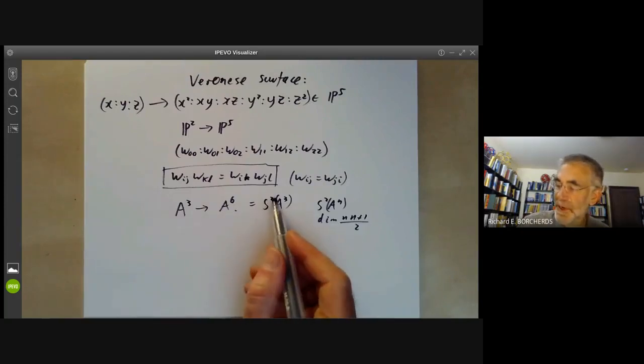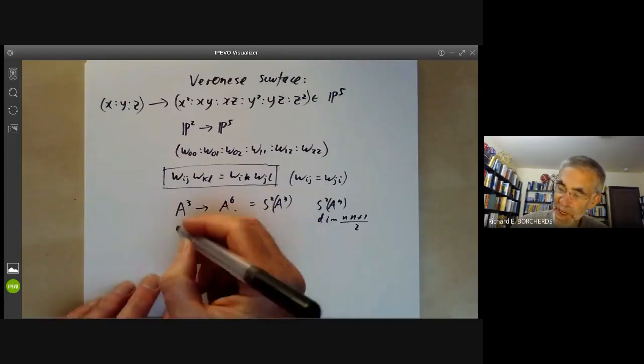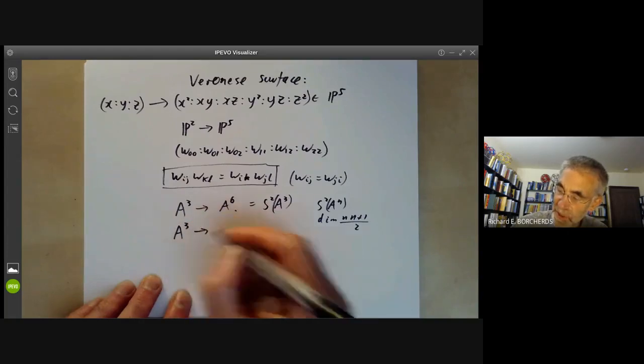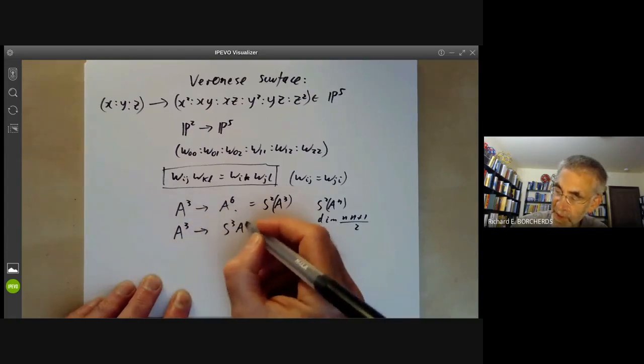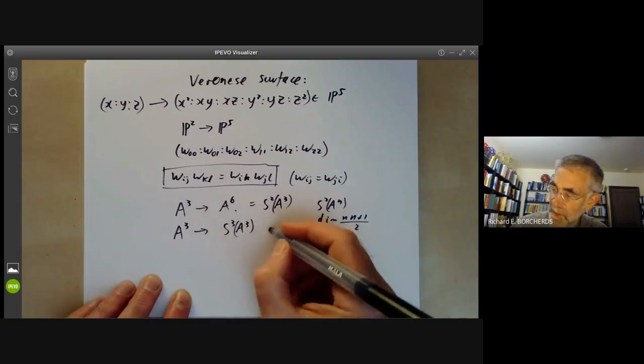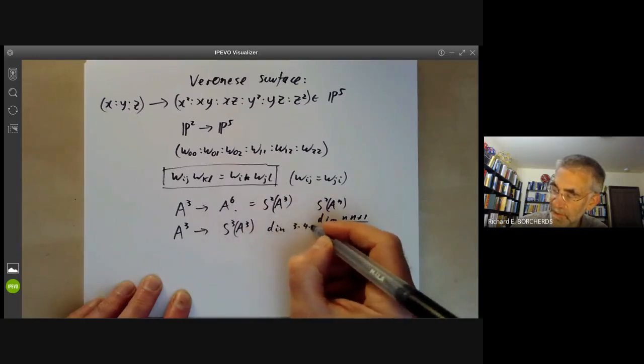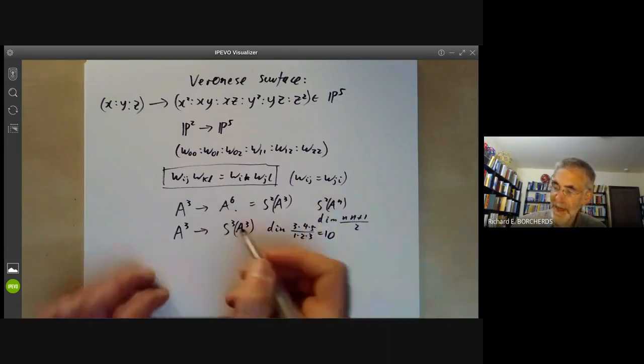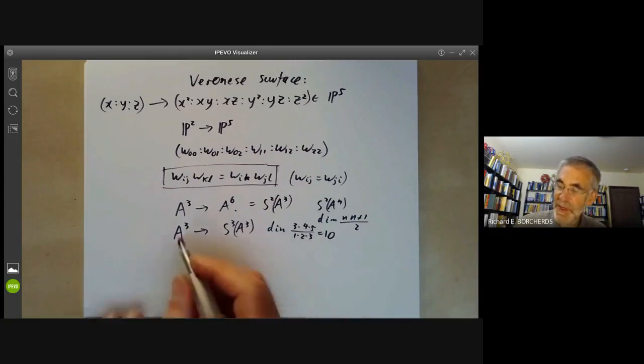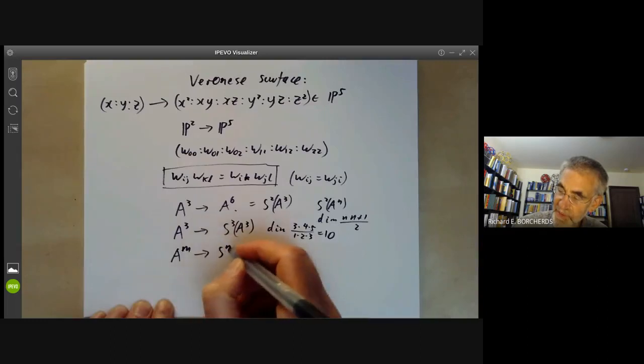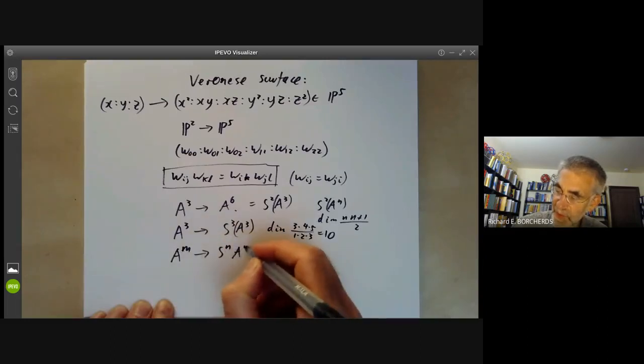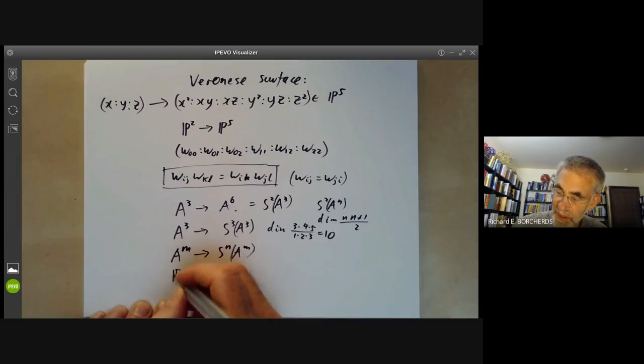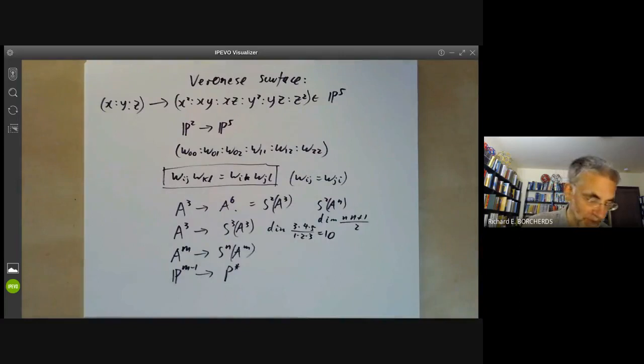Of course, there's no reason why you should stick to symmetric squares. You could also map A3 to the symmetric cube of A3, which would have dimension 3 times 4 times 5 over 1 times 2 times 3, which is equal to 10 and so on. And there's no reason why you should stop at A3. You can also have maps from Am to the symmetric nth power of Am. And this will give a map from P(m-1) to P of something fairly large that I'm feeling too lazy.